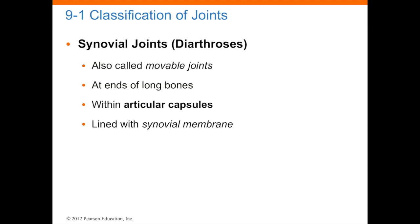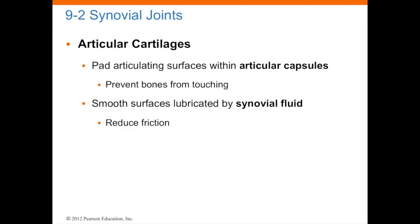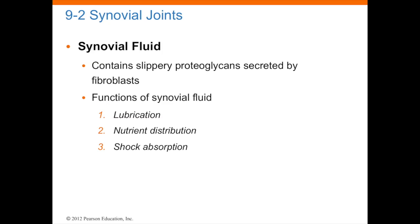Synovial joints — diarthrosis, also called movable joints, can be found at the end of long bones. They articulate with other bones and are aligned with a connective tissue known as synovial membranes. Synovial fluid is a fluid secreted by your joints which allows lubrication — think of synovial fluid like a car needing an oil change, which helps the gears move. The synovial fluid contains proteoglycans, which are the actual protein and minerals in secreted fluids that allow you to keep the joints fluid. The function of synovial fluid is: lubrication, nutrient distribution, and shock absorption.